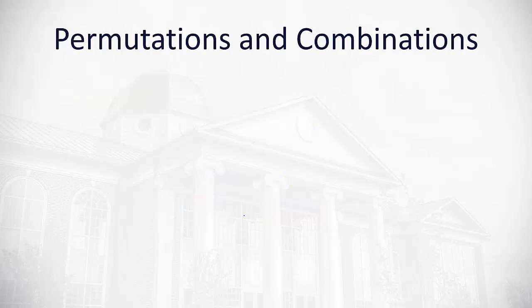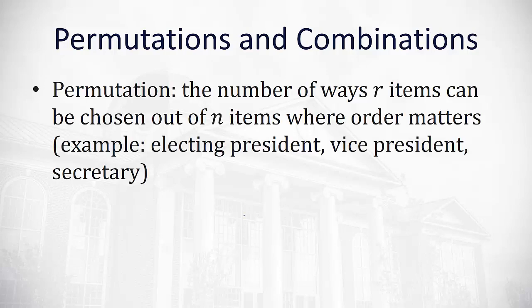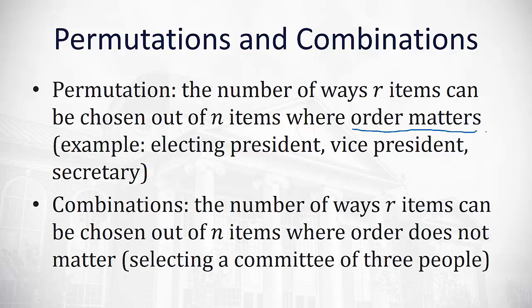Sometimes we're just interested in counting possible results. We don't have to list them out like in the tree. These are done with permutations and combinations. They're both very similar with one minor difference. A permutation is the number of ways we can choose r items out of a possibility of n items where the order matters. If it makes a difference who's chosen first, second, and third, we have a permutation. Contrast this with a combination. We're still choosing r out of n items, but now the order does not matter. Now it just matters that we're selecting a committee of three people. It doesn't matter which order they get picked in.